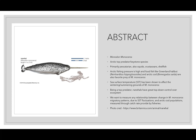Sea surface temperature fluctuations have been shown to change those places — they've been moving farther north typically. Being a top predator, they have great top-down control over the ecosystem, which basically means if they change what they're doing, the trophic level underneath them changes, and the one beneath that, and so on all the way down, throwing the whole ecosystem off. With this study we want to measure any relationship between changes in M. monoceros migratory patterns due to sea surface temperature fluctuations.